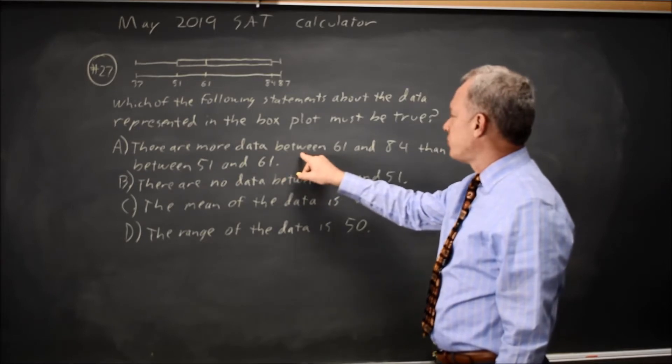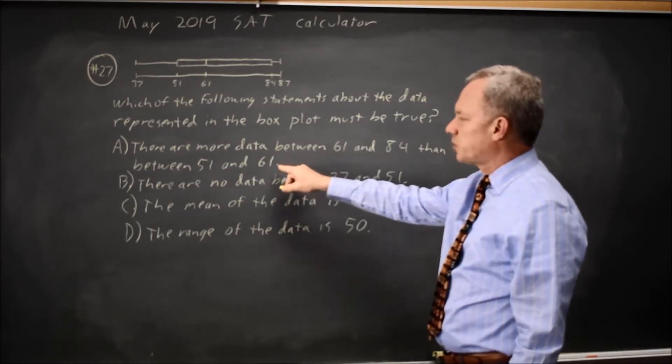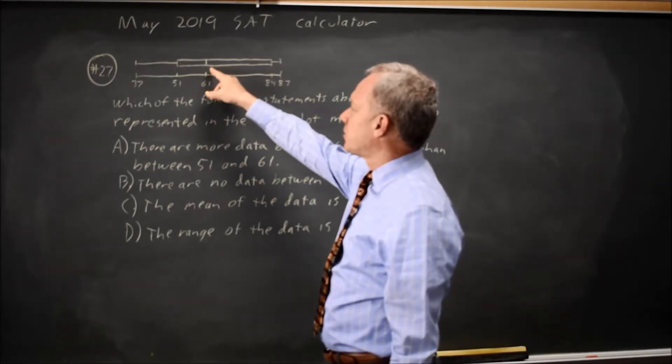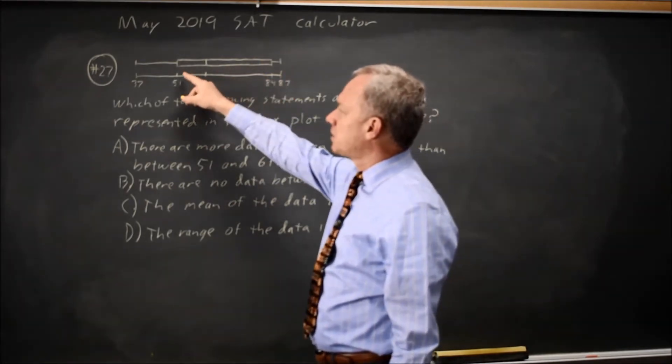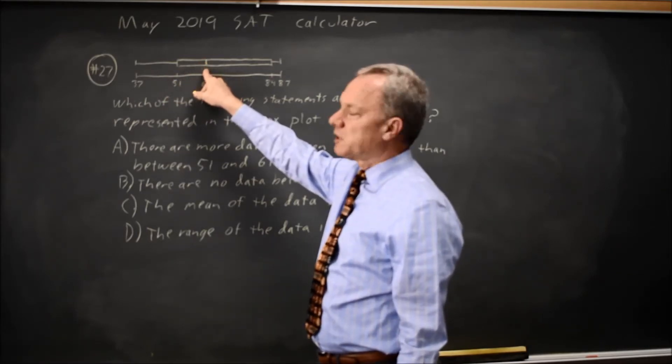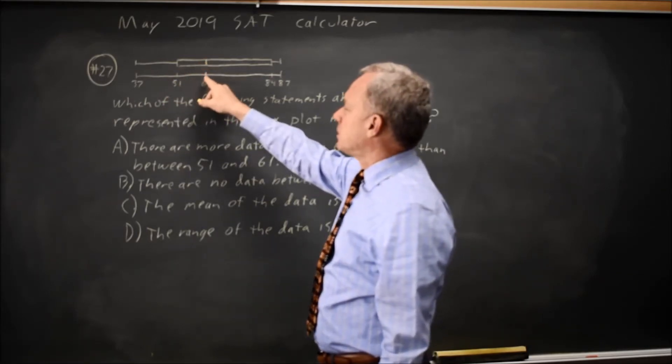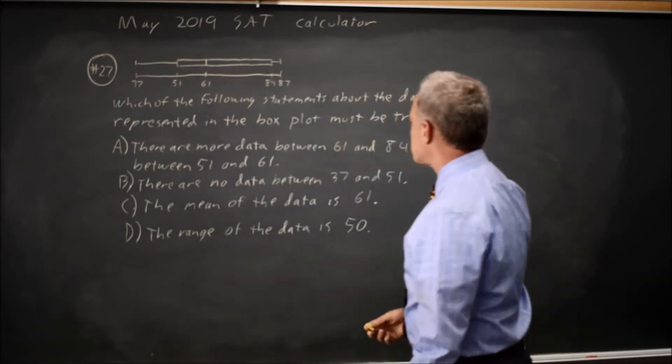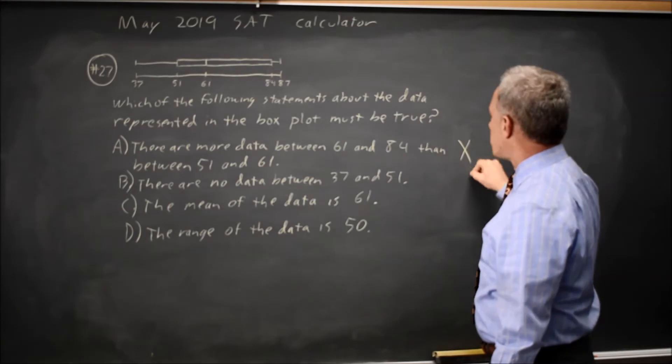Choice A says there are more data between 61 and 84 than between 51 and 61, but 25% of the observations should be in each quartile, so 25% between the first quartile and the median, 51 to 61, and 25% between the median and the third quartile, 61 to 84, so there should not be more data in one block than the other.